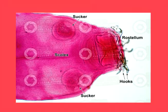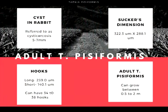The strobila is made up of segments called proglottids, and it is possible for a tapeworm to have thousands of proglottids. In rabbits, T. pisiformis larvae attach themselves to the liver and intestine, forming cysts of 5 to 7 mm in diameter, and this is referred to as cysticercosis. In adult T. pisiformis, the long hooks of the scolex are on average 239.9 micrometers and the short hooks are 140.1 micrometers. The dimensions of the suckers are 322.3 micrometers by 288.1 micrometers. They can have from 34 to 38 hooks, which can be up to 234 micrometers in length.